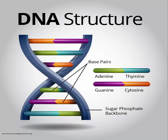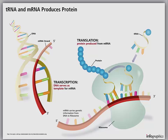Each base is attached to a sugar molecule and a phosphate molecule. Together, a base, a sugar, and a phosphate are called a nucleotide. Nucleotides are arranged in two long strands that form a spiral called a double helix. The making of proteins occurs in two steps: transcription and translation. A product of transcription is mRNA, which occurs in the nucleus and requires RNA polymerase. The products of translation are polypeptide chains that eventually become proteins, and translation occurs in the ribosomes.